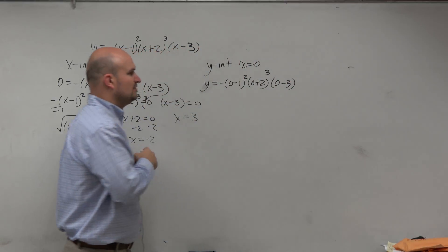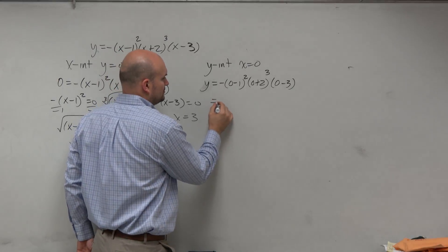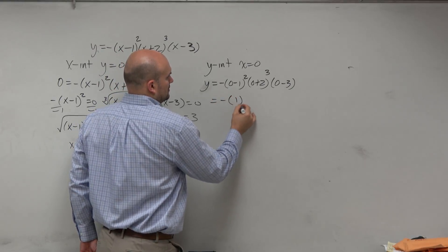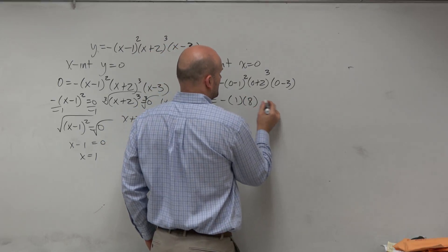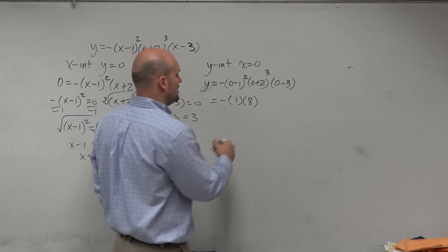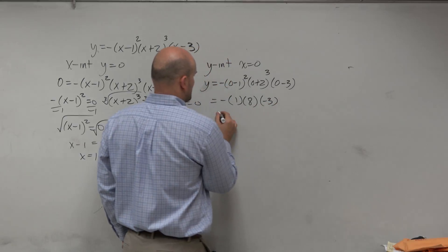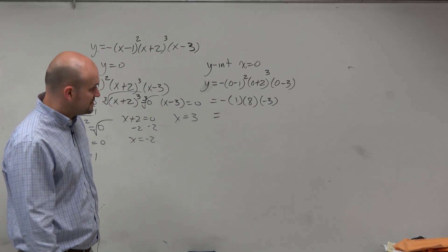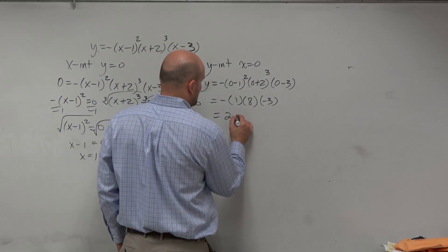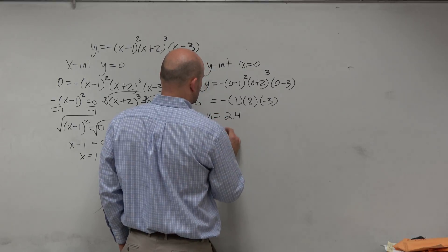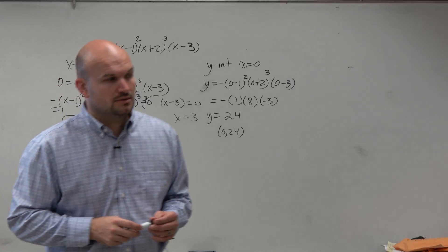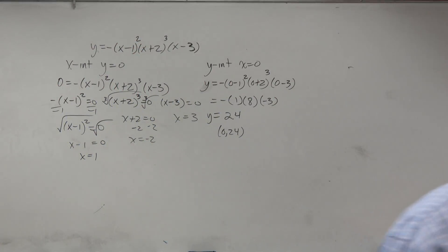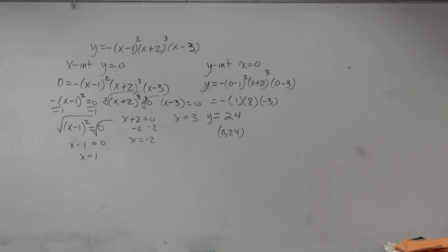OK. So now we have negative 1 squared, which is going to be a positive 1. We have 2 raised to the third power, which is 8. And we have 0 times 3, which is a negative 3. So therefore, we have negative 1 times 8, which is negative 8 times 3, is 24. So we could say y is equal to 24, or 0 comma 24. Correct? All right, so now let's go and look at our graph, see if we did our math correct.